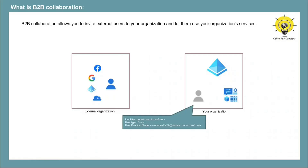The identity will be your initial domain — that means domain.onmicrosoft.com — and the user principal name of this guest user will be username#ext#@domain.onmicrosoft.com. One more thing: this account will not have any credentials associated, because when this user accesses your organization's resources, the account will be authenticated by his own organization. Your Azure AD tenant will not authenticate this user.